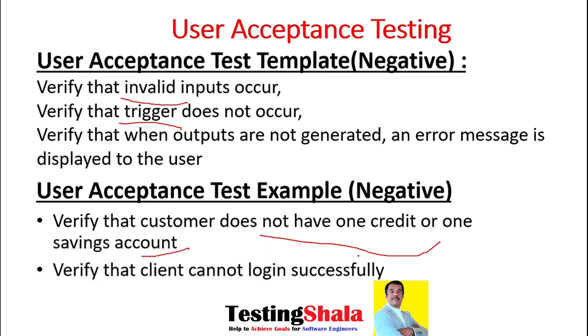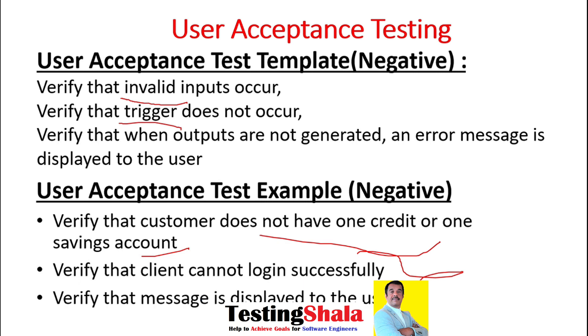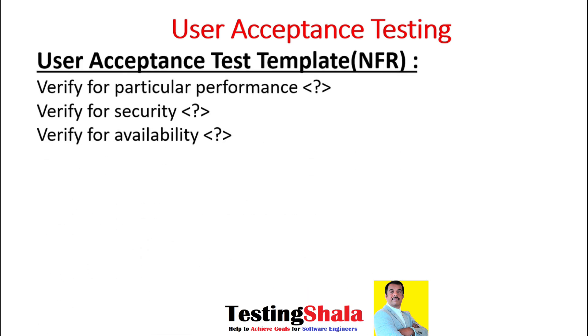When the user is not able to log in successfully, they should get an error message saying they are not a valid user. The next type of user acceptance test cases we can write are related to NFR — non-functional requirements.